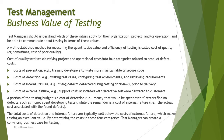Cost of Quality involves classifying project and operational costs into four categories related to defect cost. The first category is cost of prevention — training developers to write more maintainable and secure code to prevent as many defects as possible. Static analysis of code, static testing of documentation and work products — these are all steps toward defect prevention. The amount invested in order to prevent a defect is measured as the cost of prevention.